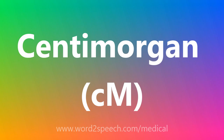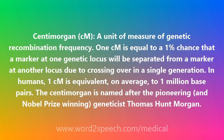Centimorgan, cM. A unit of measure of genetic recombination frequency. 1 cM is equal to a 1% chance that a marker at one genetic locus will be separated from a marker at another locus due to crossing over in a single generation. In humans, 1 cM is equivalent, on average, to 1,000,000 base pairs. The Centimorgan is named after the pioneering and Nobel Prize-winning geneticist Thomas Hunt Morgan.